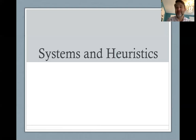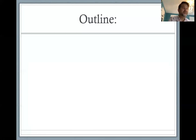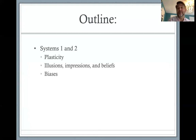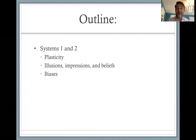So, systems and heuristics. Let's start with a little outline of what we're going to discuss today. We're going to first look at the discussion from Kahneman chapter one of system one and system two, and some related issues: plasticity, illusions, impressions and beliefs, and biases. We're going to introduce all of these concepts and they'll prove fundamental to what we're going to be doing later on in the class.